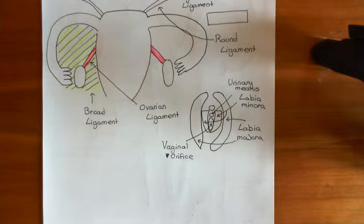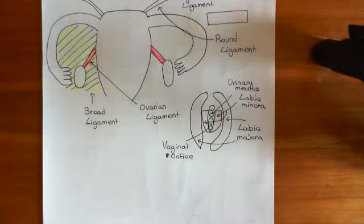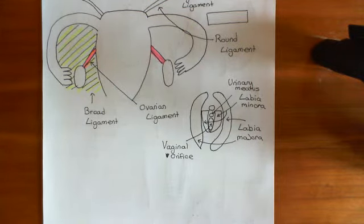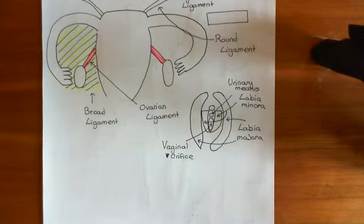We've discussed two of the most common places where this endometrial tissue ends up, which are the ovaries and also the uterine ligament. We're now going to move on to discuss the recto-uterine pouch.